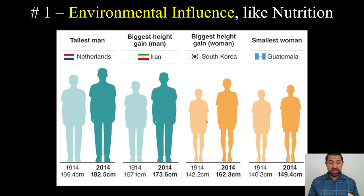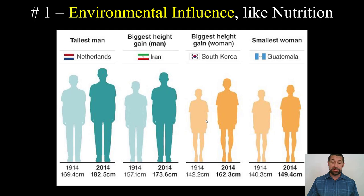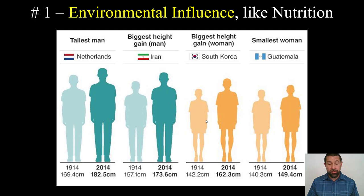What's the big difference between 1914 and 2014? The answer is nutrition. We now have a global industrialized agricultural system capable of producing much higher calories available per capita today than in 1914. The data are clear: malnourished children do not attain their genetic potential for height. Whether or not you received enough calories, enough protein as a child, is what we call the environmental influence — often referred to as nature versus nurture.